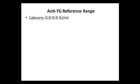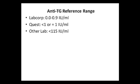Let's take a look at the reference range for antithyroglobulin antibodies. According to LabCorp, their range is 0 to 0.9 international units per milliliter. Quest Diagnostics has a pretty similar range — less than or equal to 1 IU per milliliter. Other labs can have a different reference range; for example, one of the labs my patient went to had a range of less than 115 IU per milliliter.